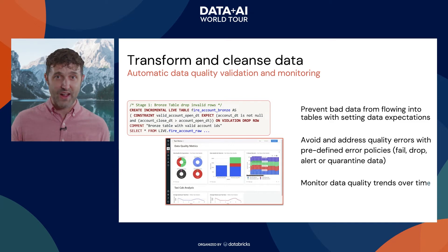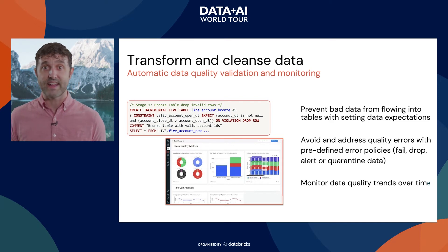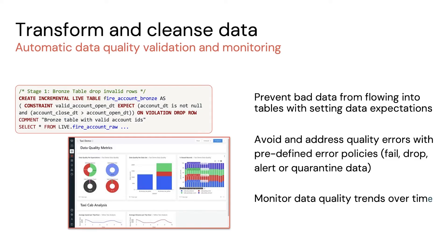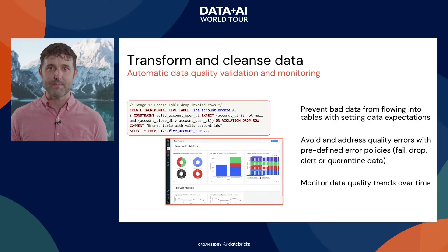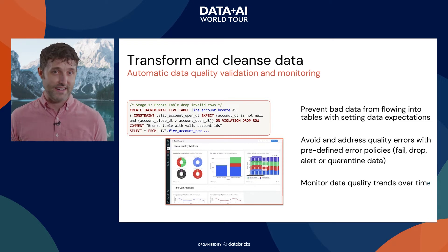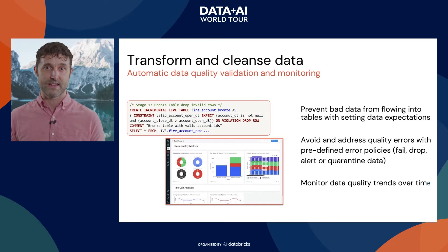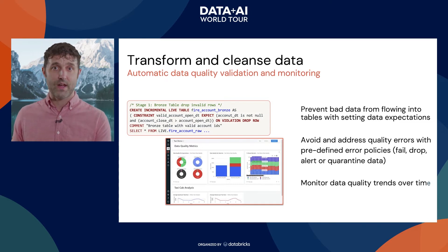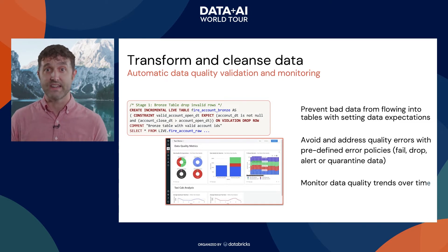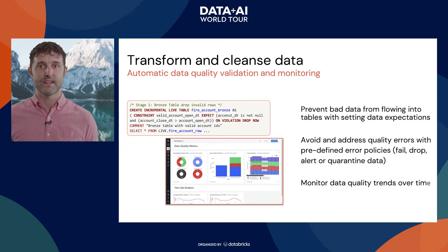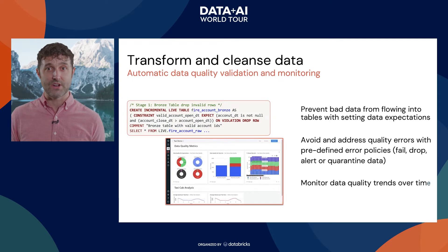It's more than just transformations, because anyone can write a SQL query wrong, or the data underneath you might change. That's why quality is built into Delta Live Tables through a technique called expectations, where you declaratively state what you expect about the data. Similar to a database constraint but more powerful, expectations have tunable severity. For critical data reported to a regulatory agency, you can abort the pipeline. Earlier in your pipeline, you can count bad records, set alerts at thresholds, or drop that data while ensuring you're not dropping too much.